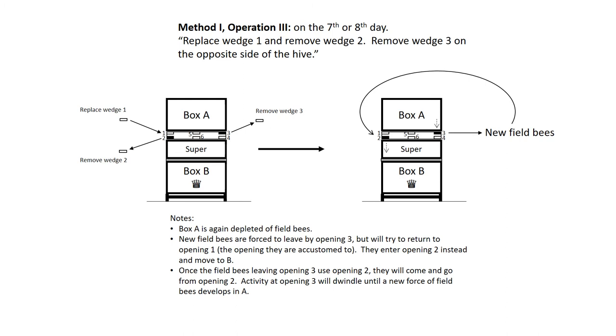Method one, operation three on the seventh or eighth day. Replace wedge one and remove wedge two. Remove wedge three on the opposite side of the hive. Box A is again depleted of field bees. New bees are forced to leave by opening three, but will try to return to opening one, the opening they are accustomed to. They enter opening two instead and move into B.